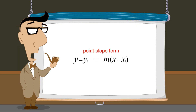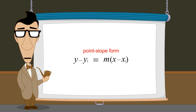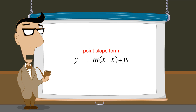You may sometimes see the point-slope equation written with the variable y alone on the left side. To write the point-slope equation in this form, we simply add y1 to both sides, cancelling out the negative y1 on the left, which gives us the point-slope form with y alone on the left side.